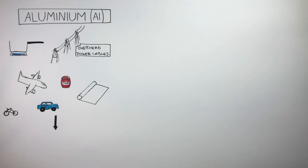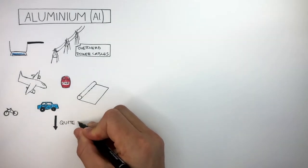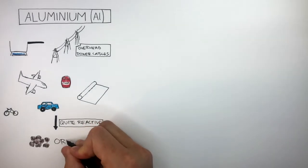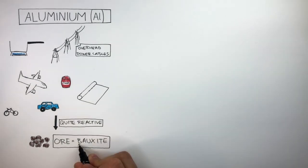But there's one problem. Aluminium is quite reactive. It's found in the earth's crust combined with oxygen. Aluminium oxide is found in an ore called bauxite. Bauxite contains Al2O3 which is aluminium oxide and Fe2O3 which is iron oxide.